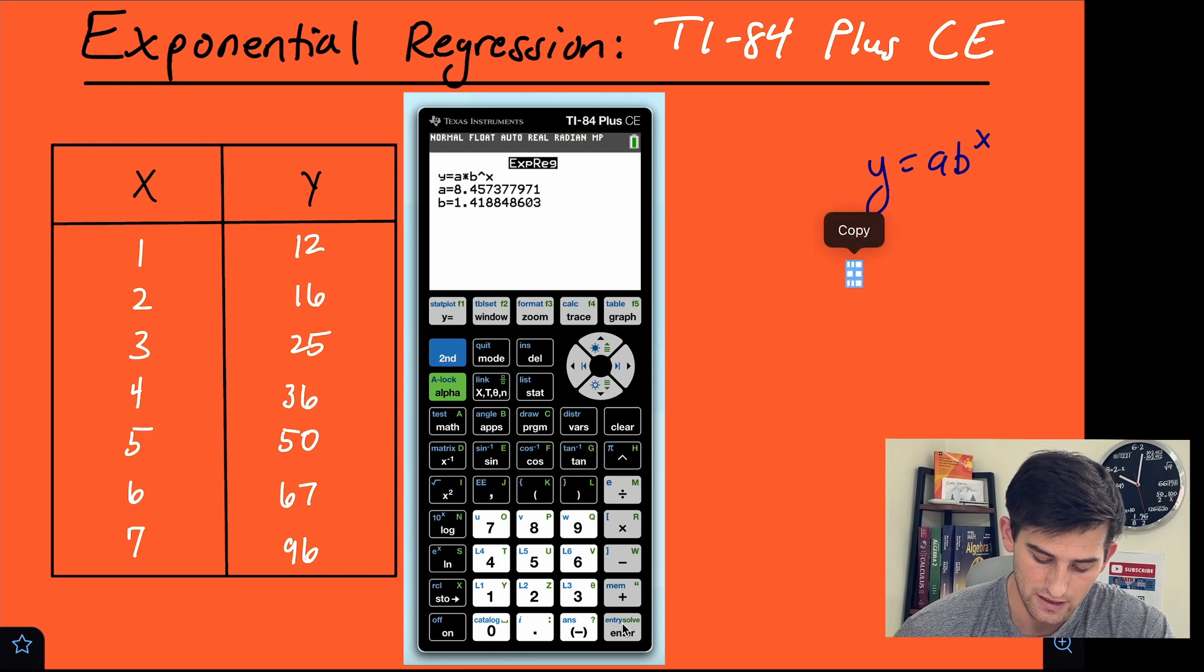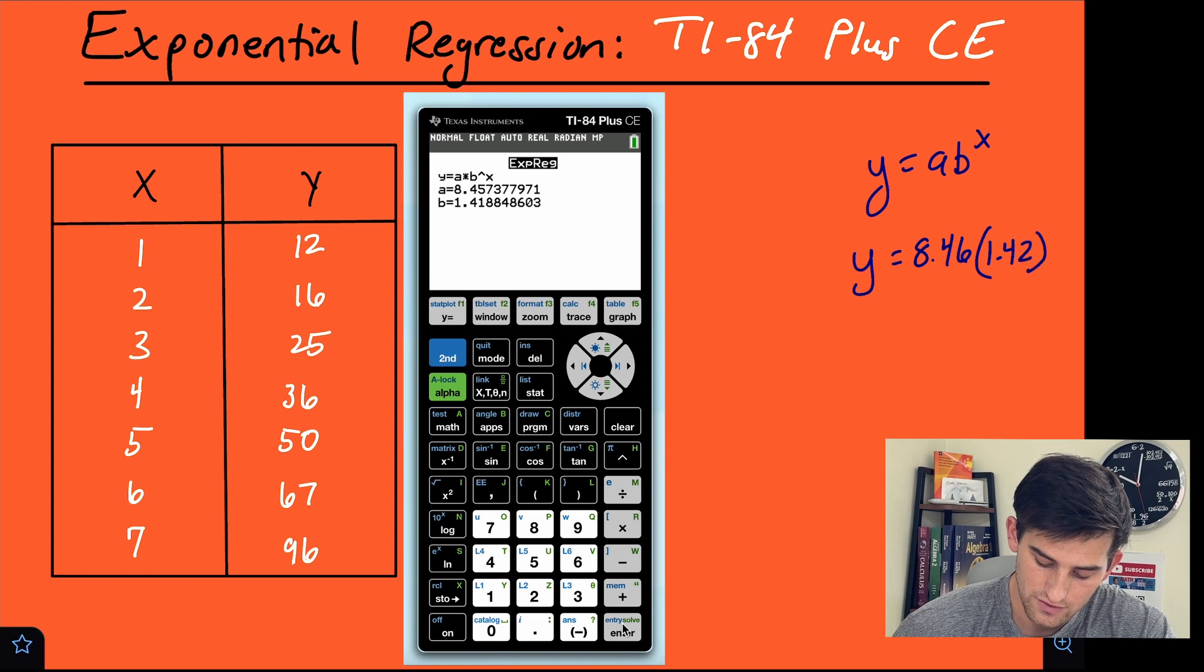So now we can say our equation would be y equals 8.46 times 1.42 to the x power.